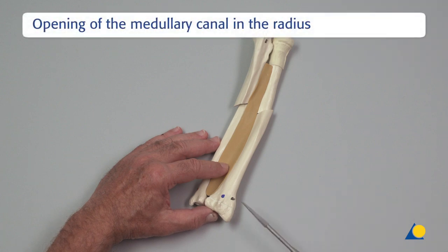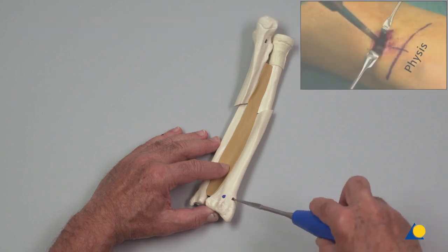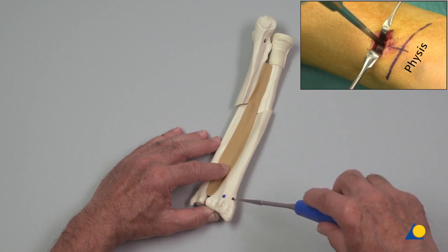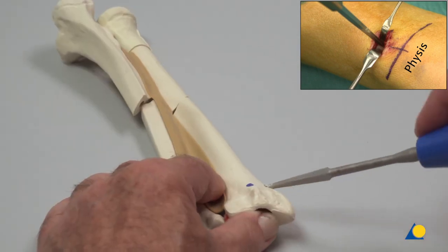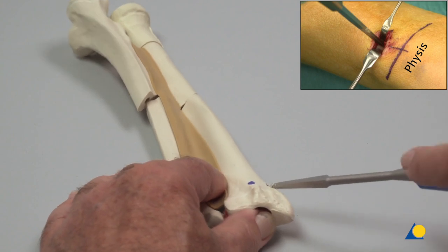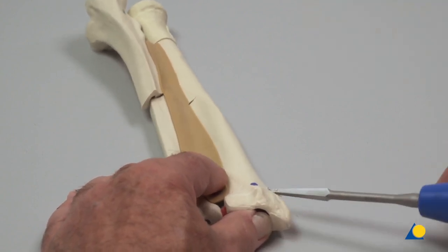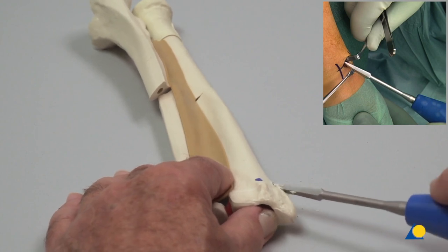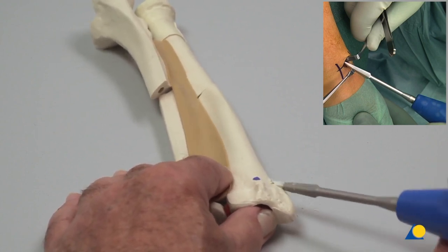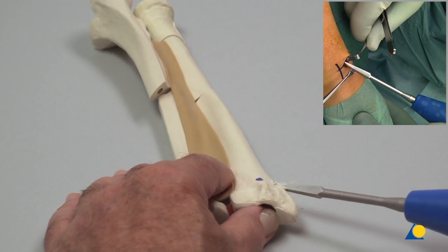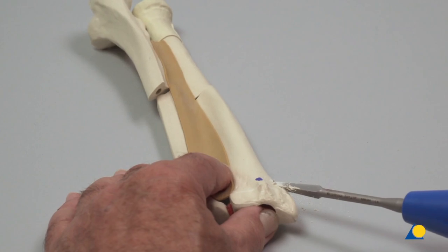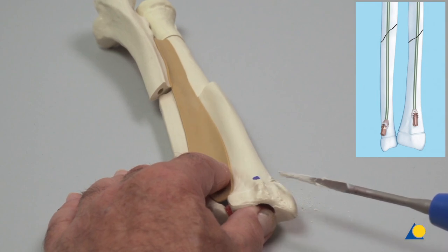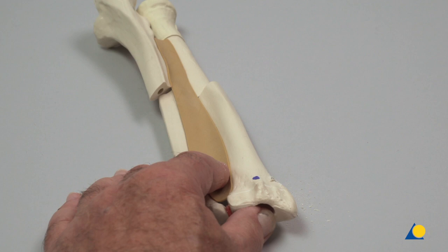The awl is inserted perpendicular to the bone and a central mark is made with oscillating movements. The awl is advanced into the metaphysis with full rotational movements. Once the awl has secured a purchase in the bone, it is lowered to an angle of 45 degrees in relation to the shaft axis and the bone is perforated at an upward angle. The entry point opening must be slightly larger than the selected nail diameter. When using end caps, the holes must correspond to the core diameter of the end cap. It is crucial not to penetrate the opposite cortex.